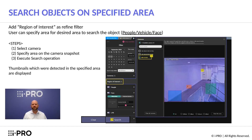The first feature I will introduce is the ability to search objects on a specified area. This allows you to specify an area within the video to receive thumbnails based on people, vehicle, and face detection.